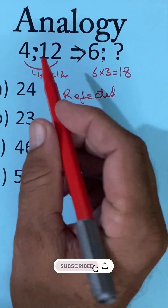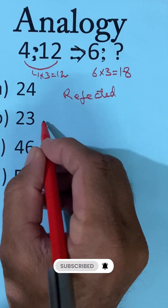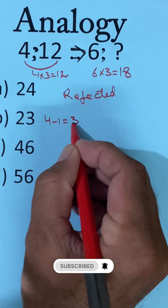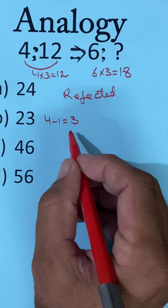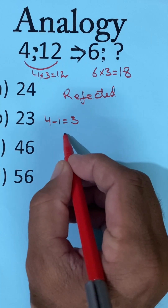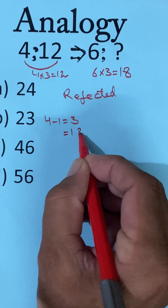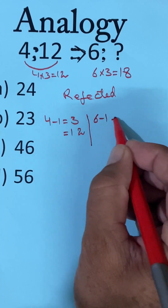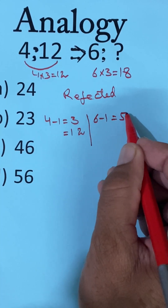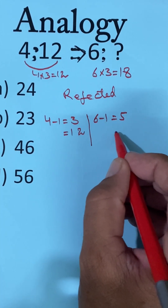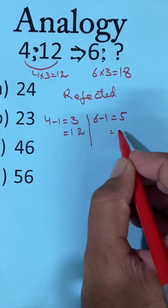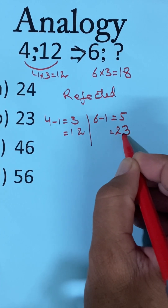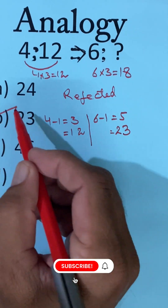Now, I trace 4 minus 1 is equal to 3, and 3 is equal to 1 and 2. And in the same way, 6 minus 1 is equal to 5, and 5 is equal to 2 and 3, which is our B option.